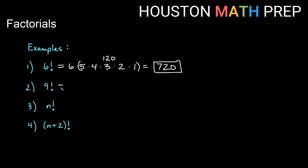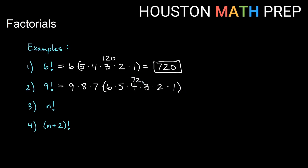Nine factorial: these start to get big pretty quickly. This is going to be nine multiplied by all of the numbers below nine going all the way down to one. We already knew six factorial was 720, but then we have to multiply by another seven times eight times nine. If we do that, we might want to use a calculator — that one becomes 362,880.